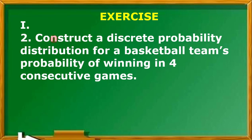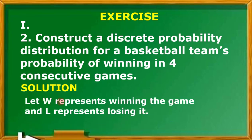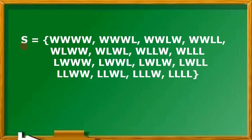Moving on to exercise number 2, construct a discrete random probability distribution for a basketball team's probability of winning in 4 consecutive games. For the solution, we let W represent winning and L represent losing. In 4 consecutive games, we start with 4 W's — meaning 4 wins — then 3 W and 1 L, and so on. So we have all in all 16 possible outcomes.